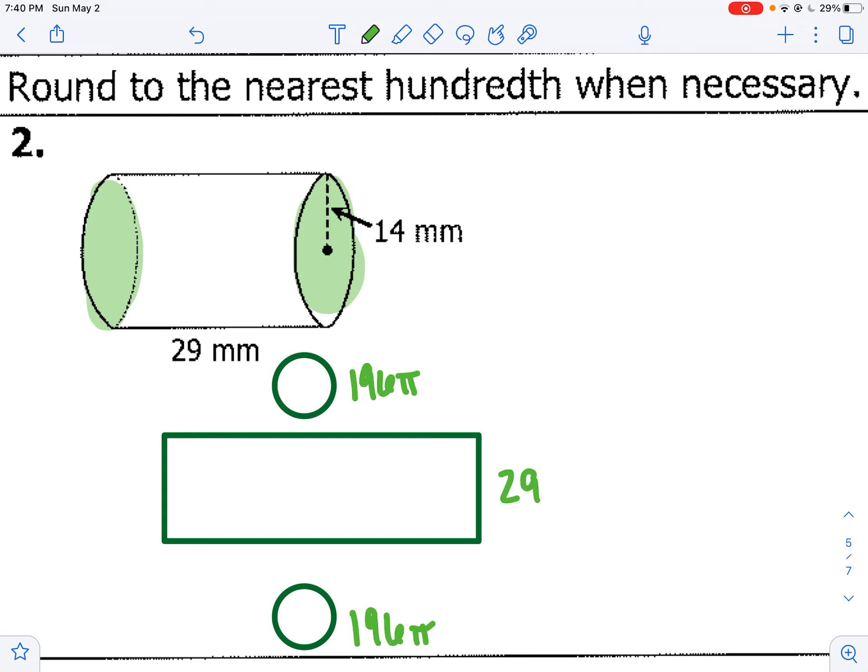And here my height is given as 29, but to find this side length, I need the circumference. So 2 times pi times 14. That would be 28 pi.